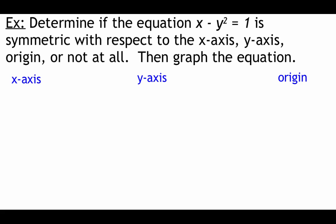We're going to look at the equation x - y² = 1 and run all three tests to see what type of symmetry it has. Then we'll use that symmetry to help draw the graph. Only one of the tests is going to work. There are some special equations where you could end up with more than one type of symmetry, but for the most part we'll just get one kind or none at all.